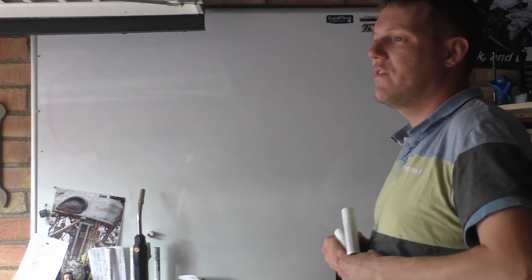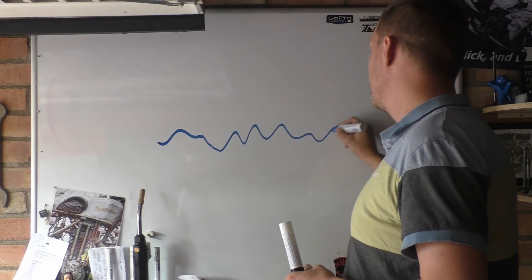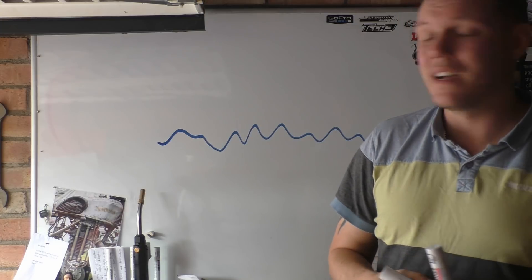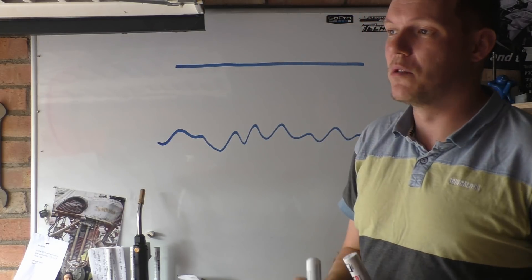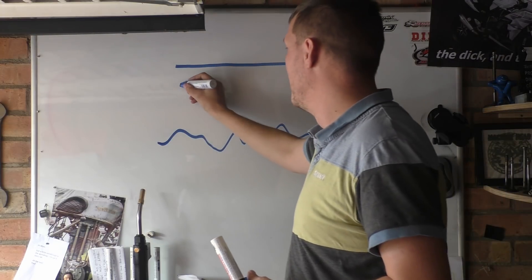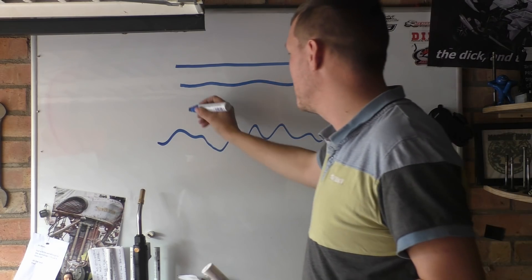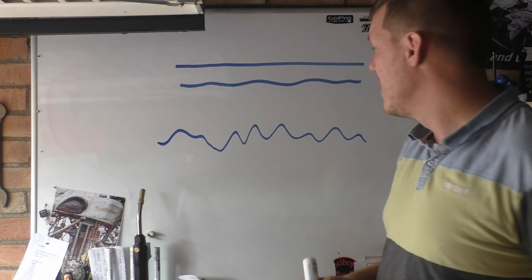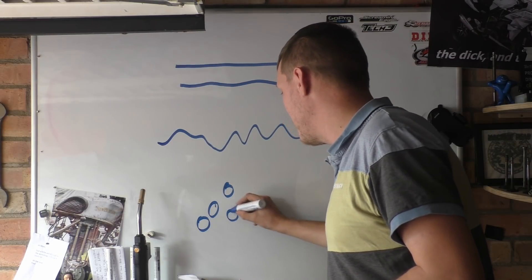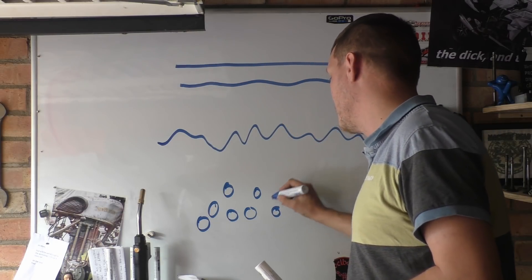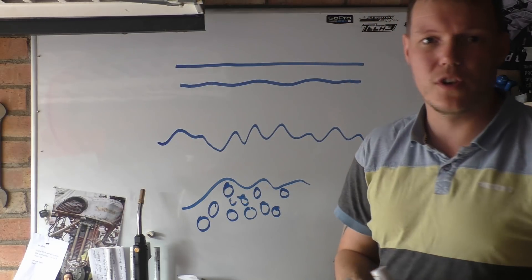Well, the surface of anything — even the smoothest mirror ever made — is like this. When you look at it under a microscope it's flat. When you look at it under a better microscope it's flat. When you go to electron microscopes and stuff like that, you start to see stuff like this on the atomic level — it is basically just piling up balls. And this surface is all over the shop.